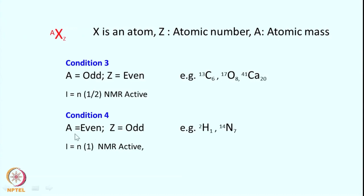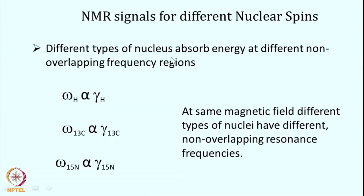Condition 4: where A (atomic mass) is even and atomic number is odd — for example deuterium (an isotope of proton) or N-14 (the natural isotope of nitrogen). In all these cases the spin quantum number is integral and they are also NMR active, but their NMR requires a little tweaking — we will discuss how to do NMR of these so-called quadrupole nuclei. Looking at all these nuclei in the periodic table, essentially there are so many that are amenable for NMR spectroscopy, making NMR applicable for biological, material science, and physics-related samples.